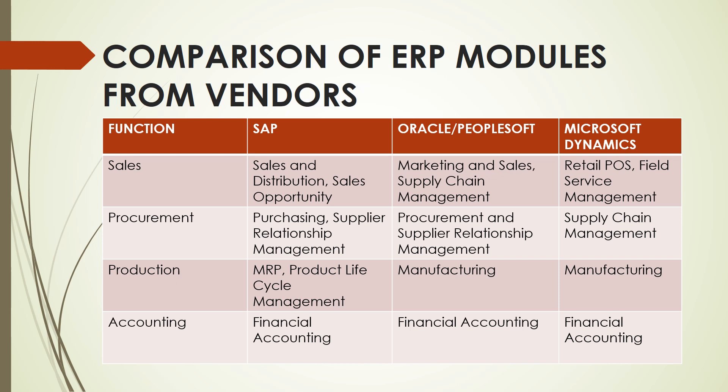For sales, SAP has sales and distribution and sales opportunity modules. For Oracle or PeopleSoft, we have marketing and sales and supply chain management, while Microsoft Dynamics has retail POS and field service management. In terms of the procurement function, SAP has purchasing and supplier relationship management. Oracle has procurement and supplier relationship management, while Microsoft has supply chain management. For production, SAP has MRP and product life cycle management. For Oracle, it has manufacturing, likewise with Microsoft.